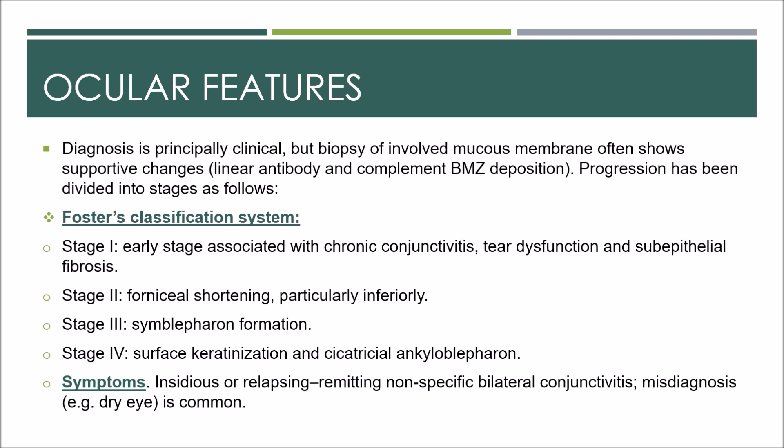Diagnosis is principally clinical, but biopsy of involved mucous membrane often shows supportive changes like linear antibody and complement deposition at the basement membrane zone. Progression has been divided into stages using Foster's classification system. Stage 1 is the early stage associated with chronic conjunctivitis, tear dysfunction, and subepithelial fibrosis. Stage 2 is forniceal shortening, particularly inferiorly. Stage 3 is symblepharon formation, and stage 4 is surface keratinization and ankyloblepharon.